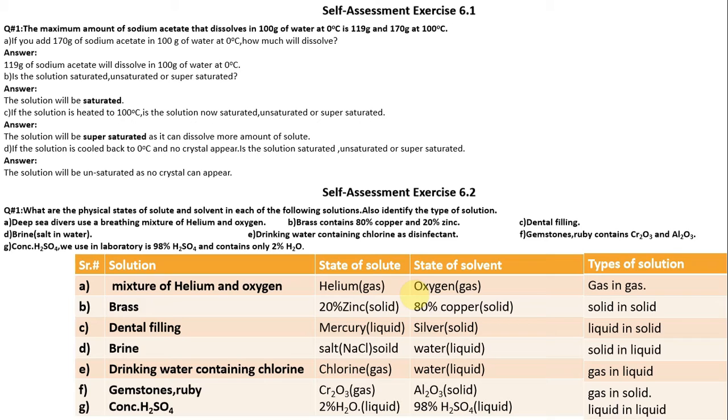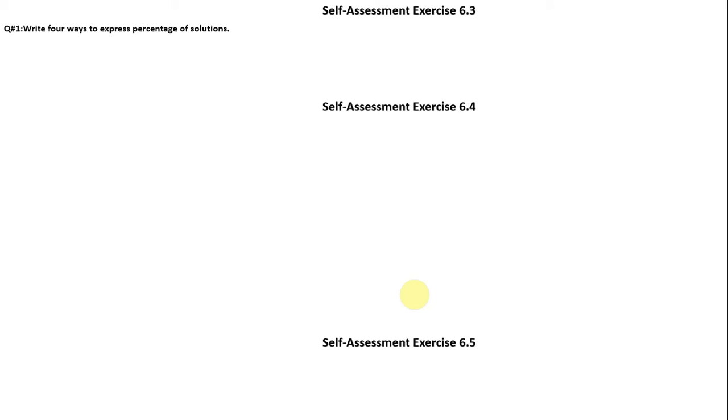Self-Assessment Exercise 6.3, Question Number 1: Write 4 ways to express percentages of solutions. Number 1: Mass by mass percent (m/m). (b) Mass by volume percent (m/v). (c) Volume by mass percent (v/m). (d) Volume by volume percent (v/v).